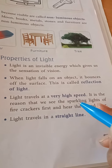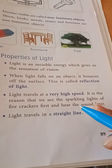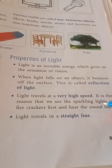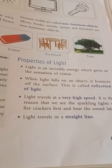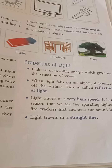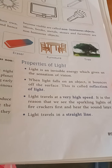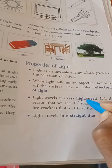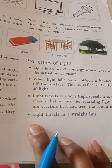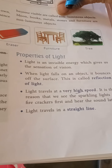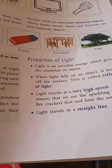Light travels at a very high speed. It is the reason that we see the sparkling light of a firecracker first and hear the sound later. If firecrackers go off, after about 2 seconds the sound will come — which means the speed of light is very high. The third property: light travels in a straight line.